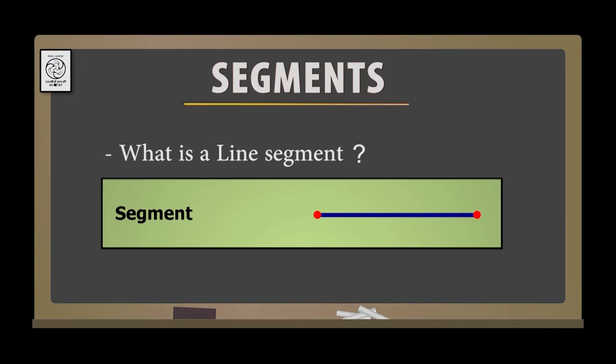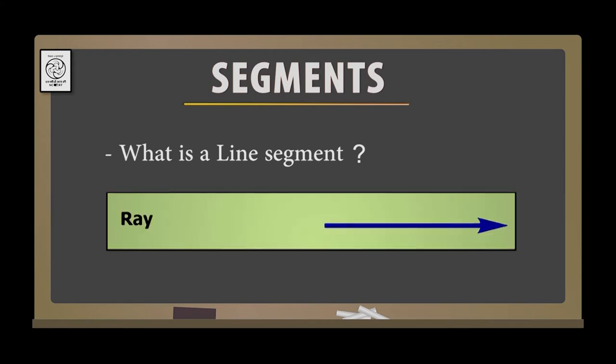We call this a segment — F and G are two fixed points, and the line segment joining between the two is called the segment FG. Here is an example of a ray. A ray extends to infinity in one direction, that is shown by this arrowhead. So HI is a ray — it starts from point H and extends to infinity in one direction.